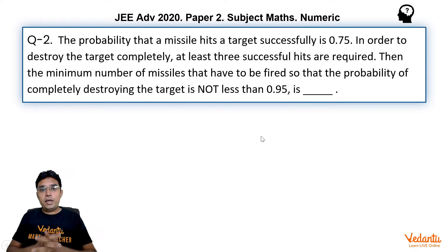This subtopic has been very frequently asked almost every year in JEE Advanced. In fact, similar to this question, we have seen 5-6 years back also. Let us see what this question is. The probability that a missile hits a target successfully is 0.75. In order to destroy the target completely, at least 3 successful hits are required. Then the minimum number of missiles that have to be fired so that the probability of completely destroying the target is not less than 0.95 is.